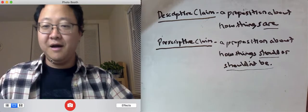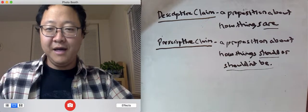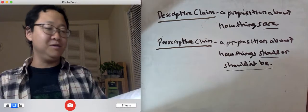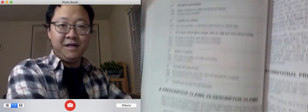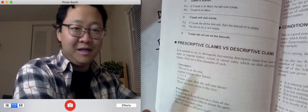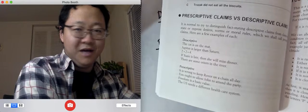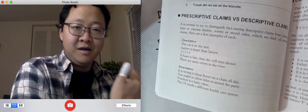So a way to help you think about this is first we can think of examples. These are on page 78. So descriptive claims are things like the cat is on the mat, Jupiter is larger than Saturn, 2 plus 2 equals 4, etc.